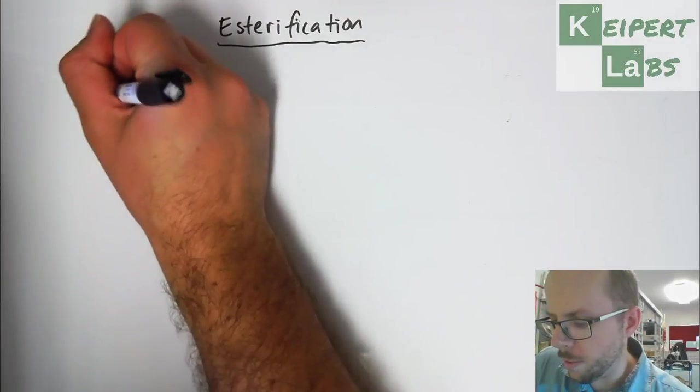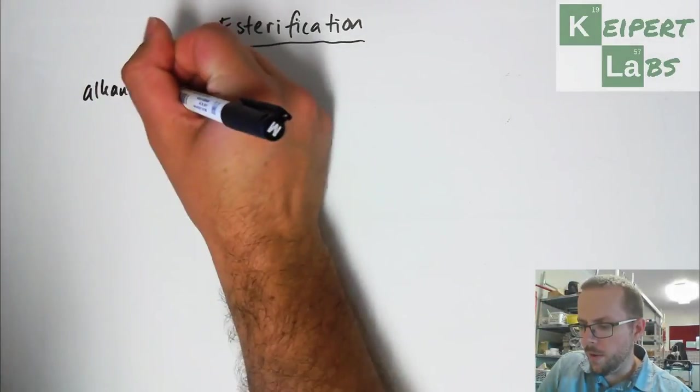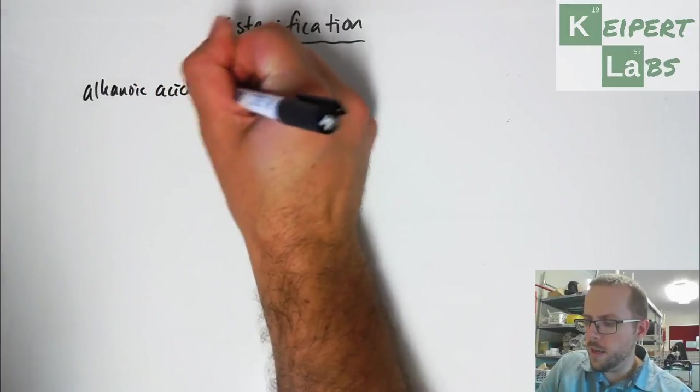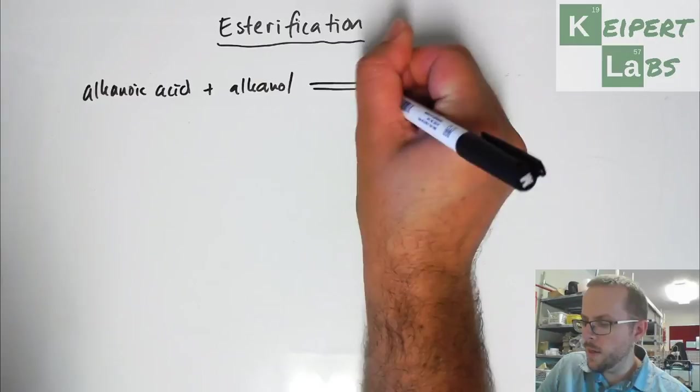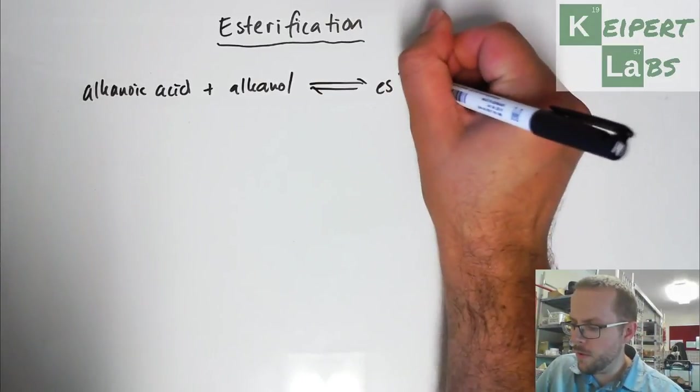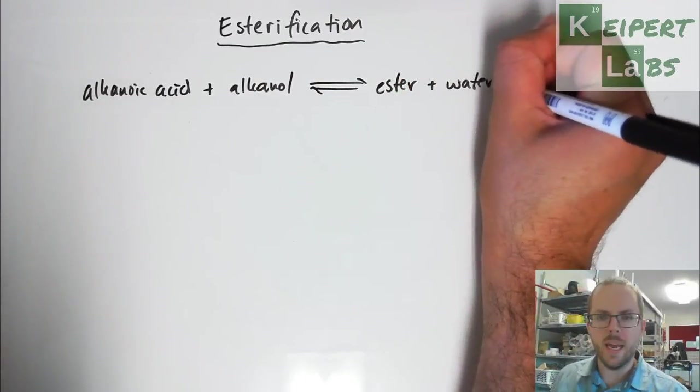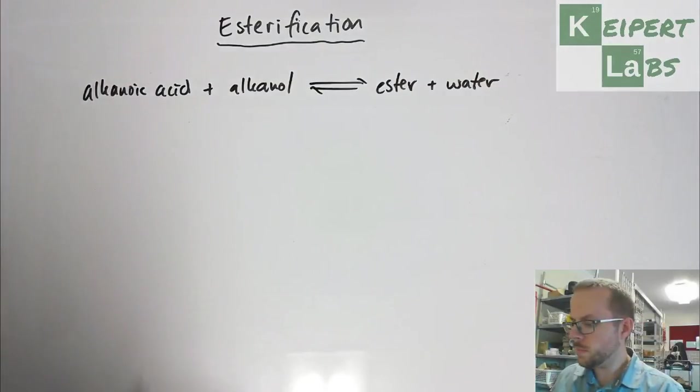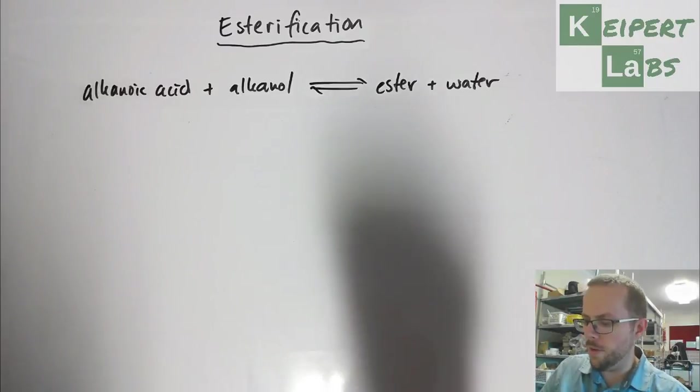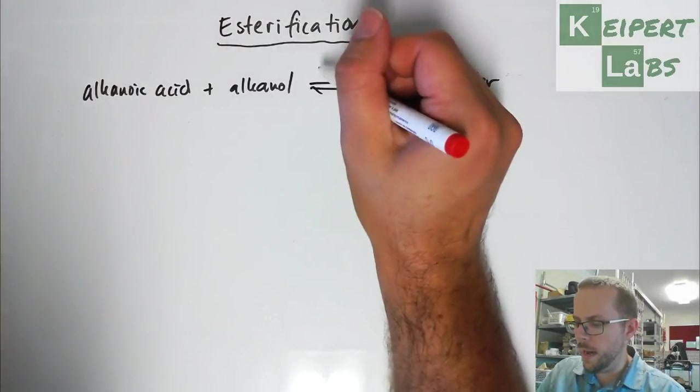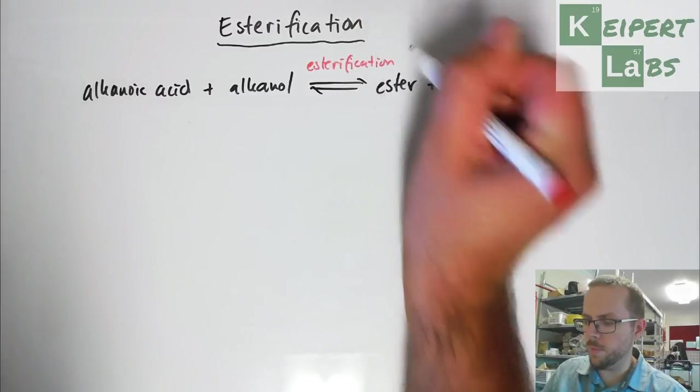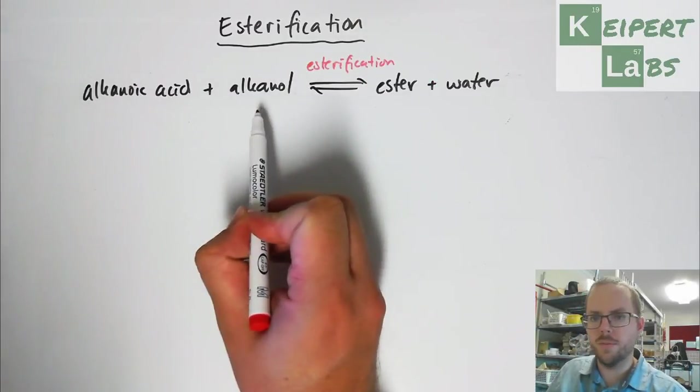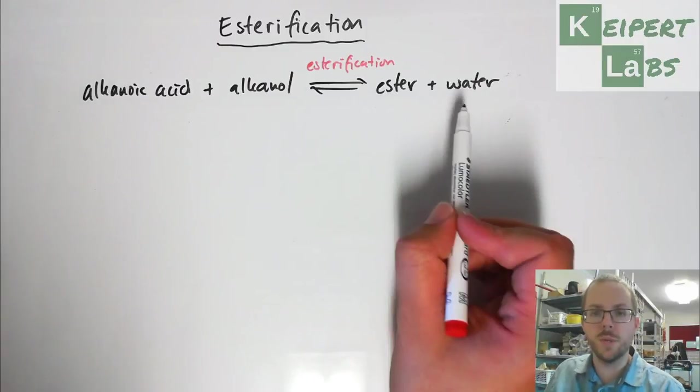So we've introduced in the previous videos that esterification is a reaction between an alkanoic acid and an alkanol in an equilibrium reaction forming an ester plus water. We've referred that the forward reaction is an esterification, this process of taking these two components and forming an ester, and in doing so water.